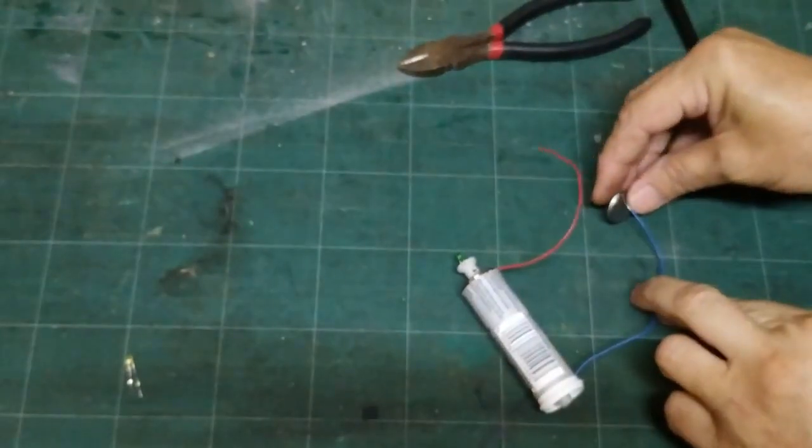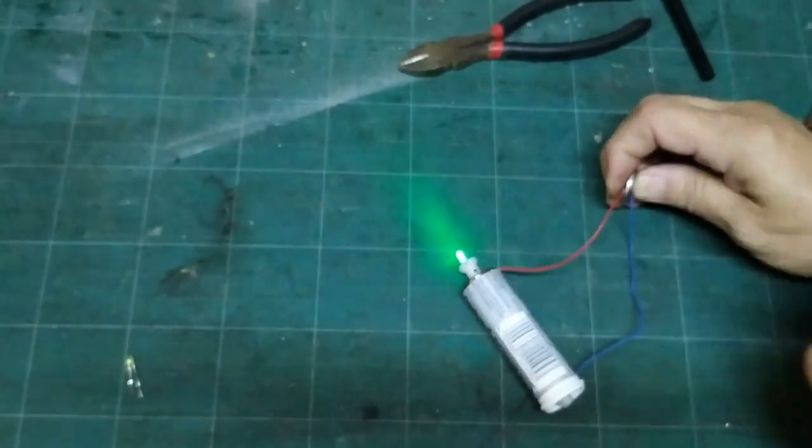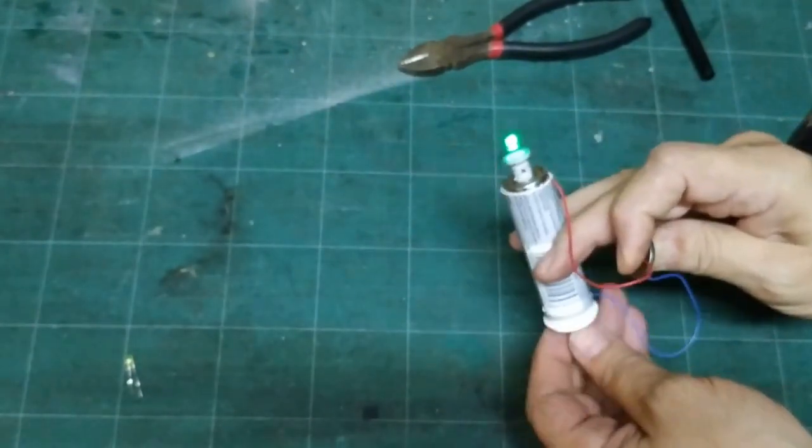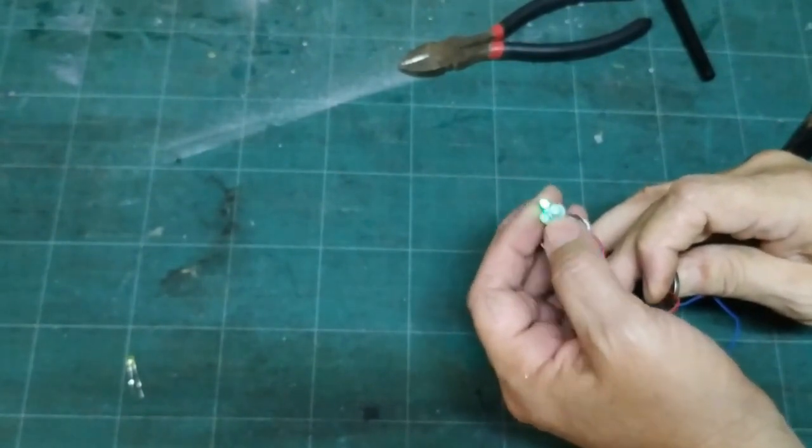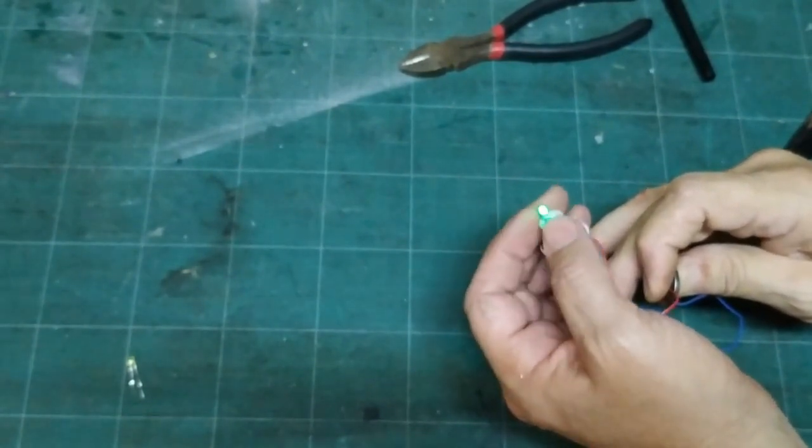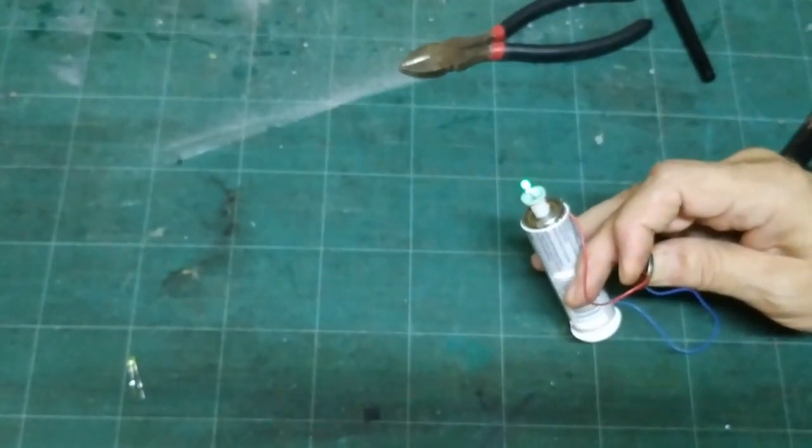And now let's just quickly connect a battery and see if it makes contact. Connecting a three volt battery to the LED and we have a light. And let's see if we turn it, it keeps burning.